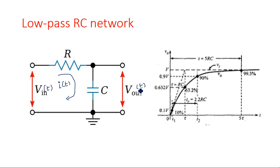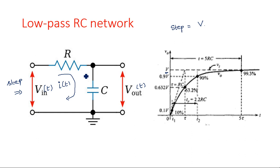We are giving a step input as the input. The step has a voltage V, which is the amplitude of the input signal. The figure shows the response of this low-pass RC network when a step input is applied. For t less than 0, there is no signal, so V_input equals 0 volts.